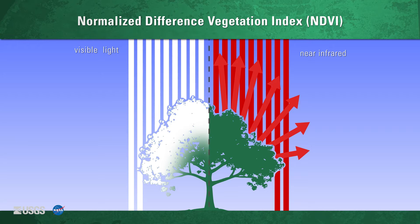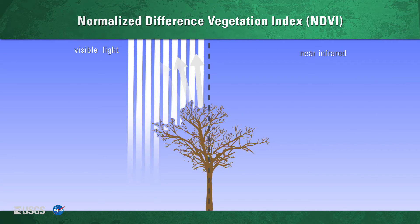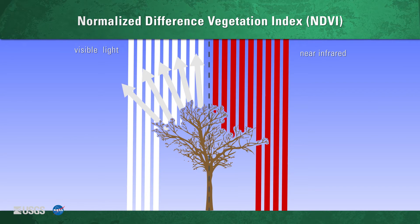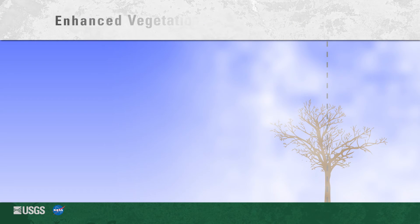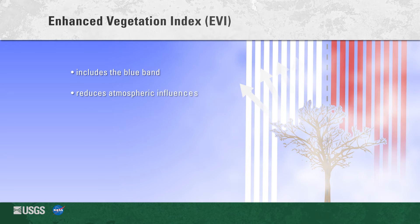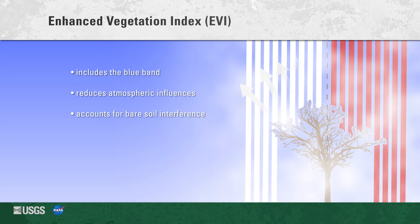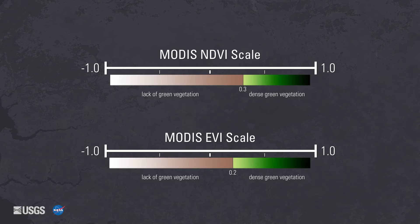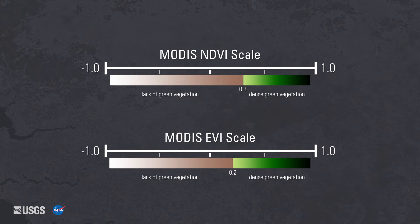In the NDVI, healthy vegetation is shown as it absorbs the visible light and reflects more of the near-infrared light, whereas unhealthy vegetation reflects more of the visible light and less of the near-infrared light. The EVI layer is similar to NDVI, but it also reduces atmospheric influences and accounts for bare soil interference.